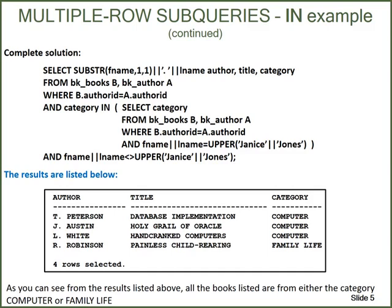The results are listed below, and you can see they have listed the Computer and Family Life categories and who the authors of those books are. As you can see from the results, all the books listed are from either category Computer or Family Life.